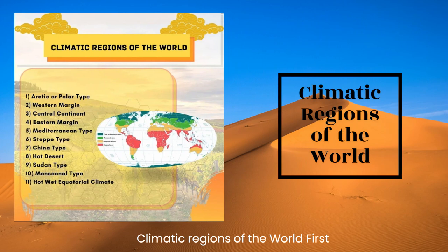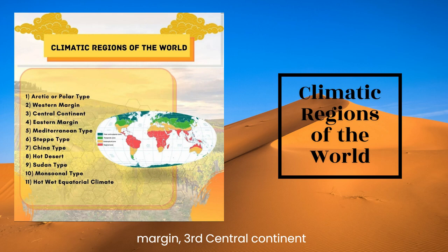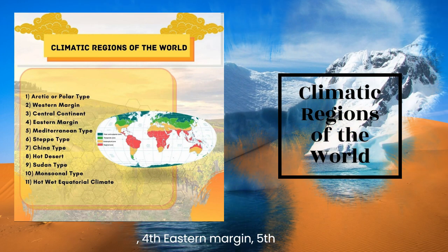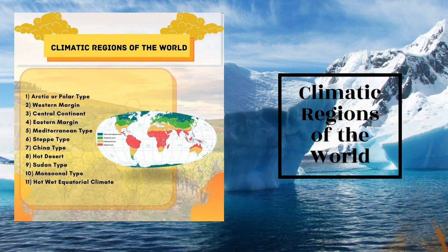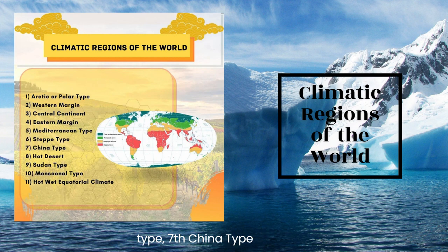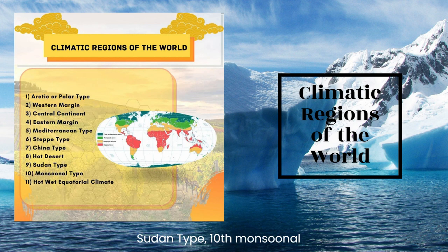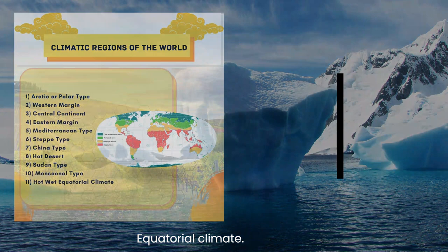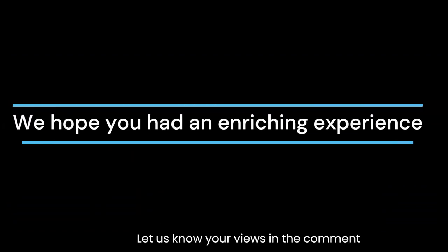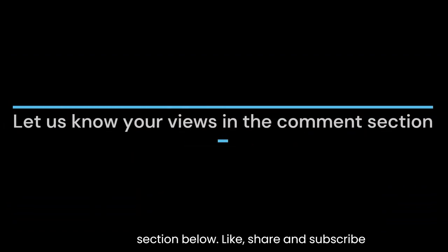Climatic regions of the world: First, arctic or polar type; second, western margin; third, central continent; fourth, eastern margin; fifth, Mediterranean type; sixth, steppe type; seventh, China type; eighth, hot desert; ninth, Sudan type; tenth, monsoonal type; and eleventh, hot wet or equatorial climate. We hope you had an enriching experience — let us know your views in the comment section below.